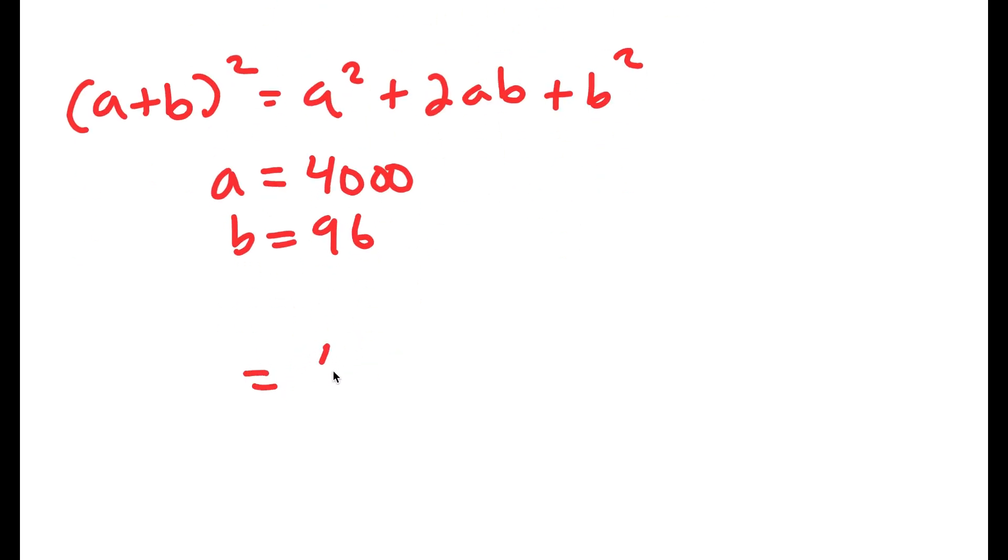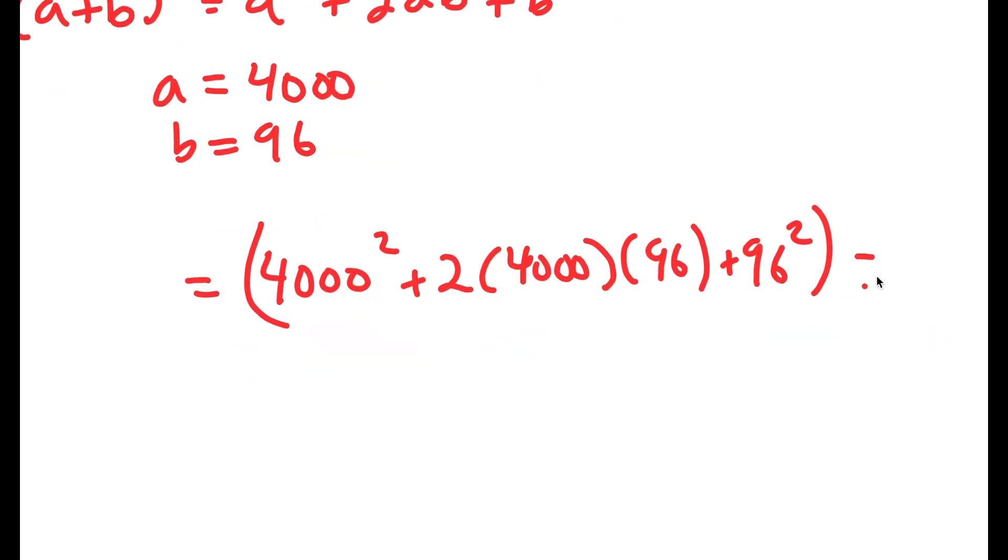This turns into 4,000 squared plus 2 times 4,000 times 96 plus 96 squared, and I have all of this times 2 minus 1.